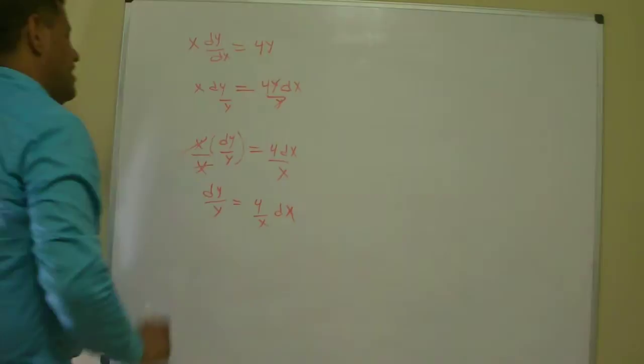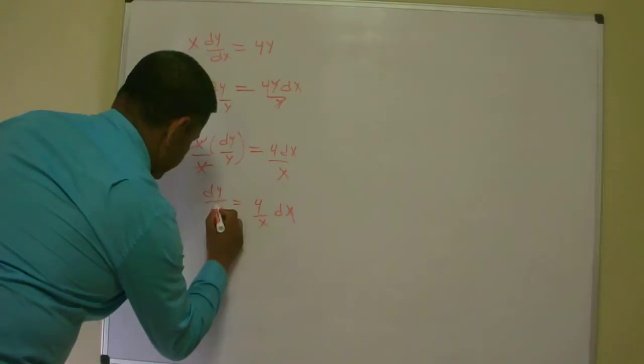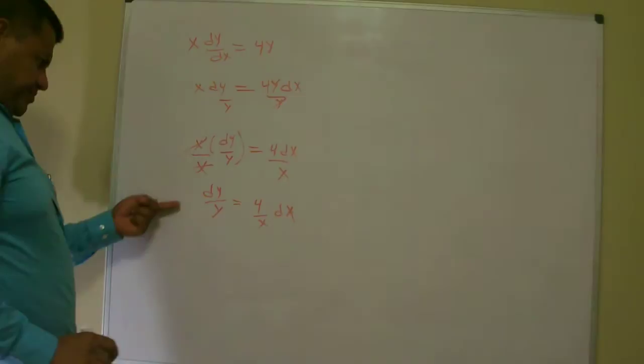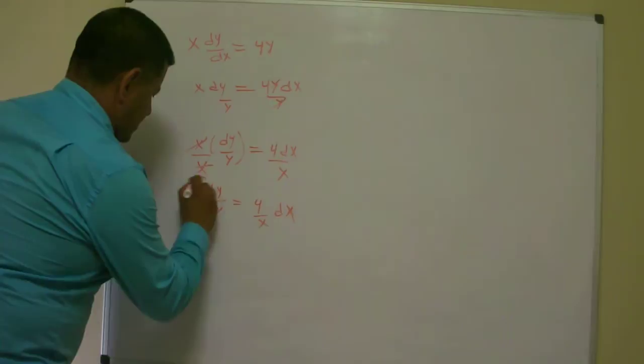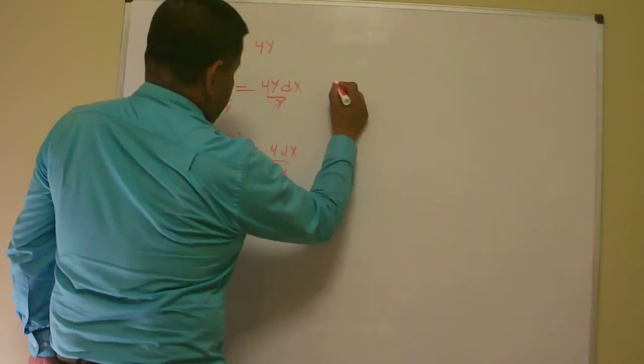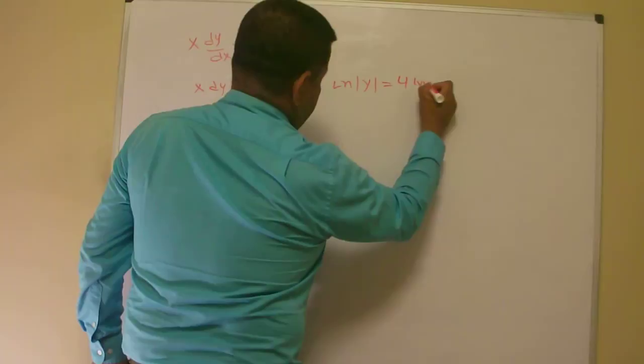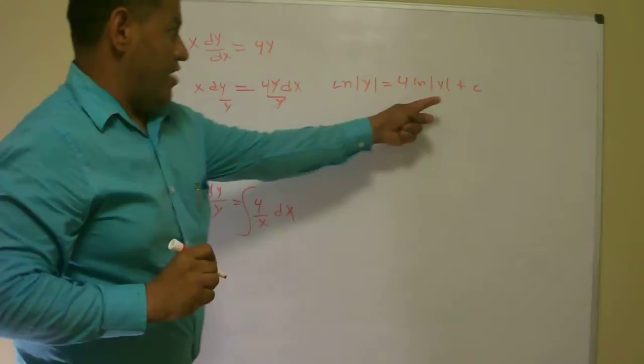So now I have it separated, so I separate the variables, and now the next step is going to be integration. So now I am going to integrate both sides of this equation. So when I integrate both sides, I got to move it up here.